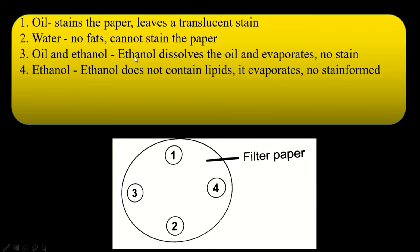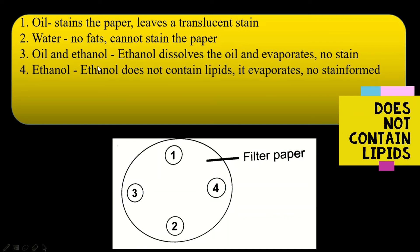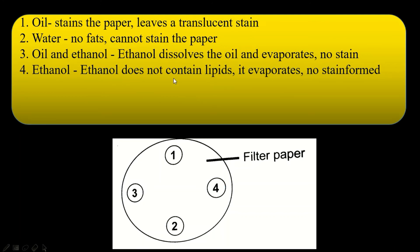At spot number three you have oil plus ethanol. Ethanol dissolves oil, forming small fatty globules, and because of that there will be no stain left at spot three. The ethanol will evaporate and spot three will dry off without any stain. At spot number four you are only adding ethanol. Ethanol does not contain lipids, and even if it did it would dissolve them. Your ethanol will evaporate and the spot will dry off, leaving no stain on your filter paper.